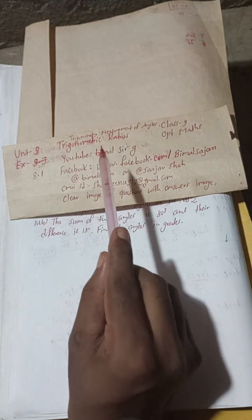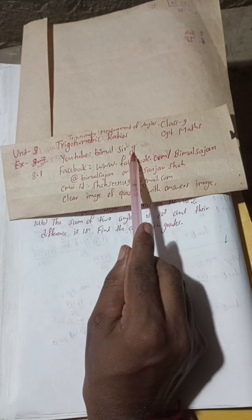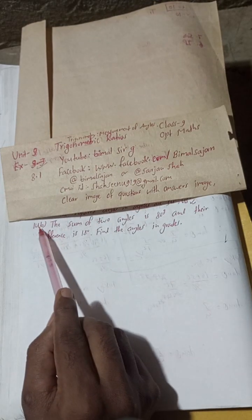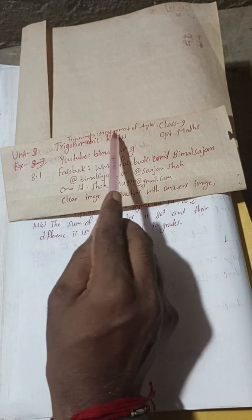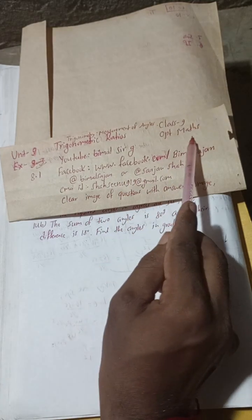Radhe Radhe Jai Shri Krishna class 9 and 10 students, welcome back to Vimal Sarji YouTube channel. This is question number 14B, exercise 8.1, unit 8 trigonometry measurement of angles, class 9 optional maths.